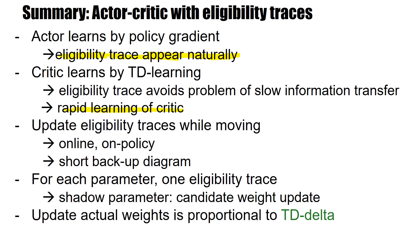It's a super short backup diagram, and for each parameter we have one eligibility trace. I call this a shadow parameter — running in the background alongside the real parameter that decides actions. Think of it as a candidate weight update, where the actual weight update is proportional to the TD delta. This is a very nice algorithm, and I really suggest that if you work with reinforcement learning, try out the actor-critic with eligibility traces.